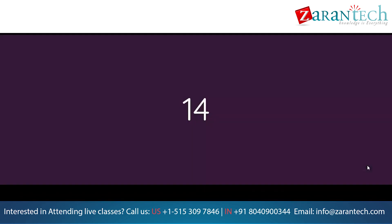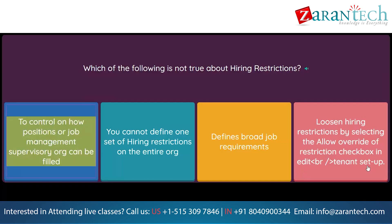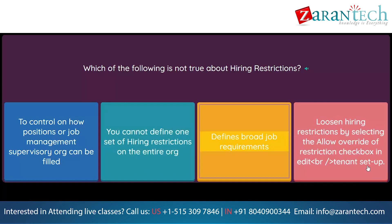Which of the following is not true about hiring restrictions? Option 1: To control how positions or job management supervisory org can be filled. Option 2: You cannot define one set of hiring restrictions on the entire org. Option 3: Defines broad job requirements. Option 4: Loosen hiring restrictions by selecting the Allow Override of Restriction checkbox in edit tenant setup.